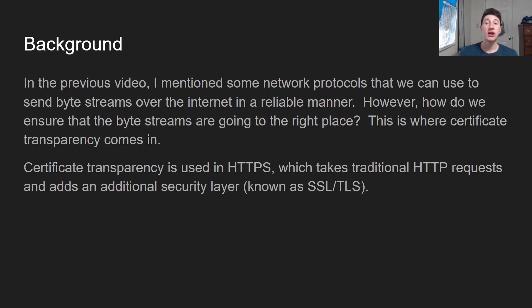So certificate transparency — what is that? Well, basically in the past I've talked about TCP and UDP, which are both network protocols to ensure that bytes get delivered over the internet. However, they don't really ensure that they're encrypted in any sort of way, or that if they were to get into the wrong hands that person wouldn't be able to read them. So instead what we're going to talk about in this video is something called certificate transparency, which is used in a separate protocol called HTTPS, which is basically built on top of HTTP and uses an SSL or TLS layer of security in order to ensure that bytes sent to a party that shouldn't have them can't just interpret them.